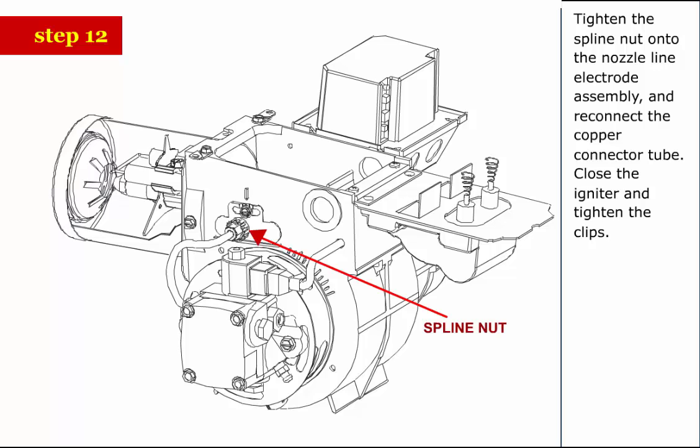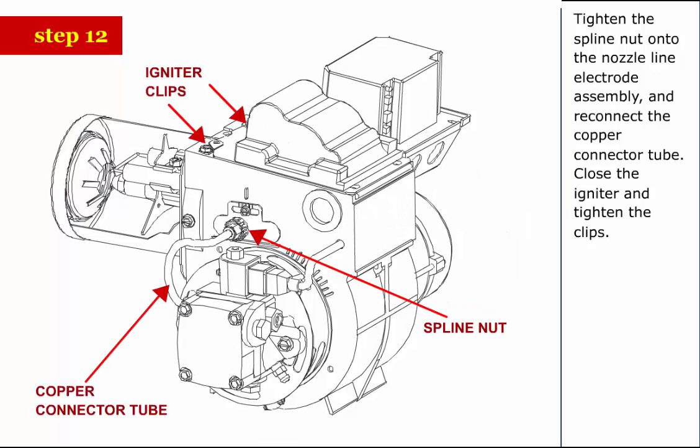Step 12: Tighten the spline nut onto the nozzle line electrode assembly and reconnect the copper connector tube. Close the igniter and tighten the clips.